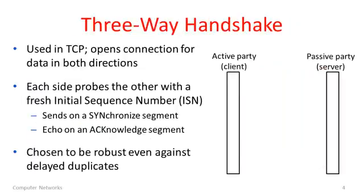In TCP a connection is established with what is known as the three-way handshake — a fairly common term you'll hear. It sets up a connection between an active party that's initiating it, typically the client, and a passive party, the server. It opens the connection for data transfer in both directions. The way it works is that each side probes the other by picking a fresh initial sequence number, and the other side needs to be able to echo this sequence number to connect.